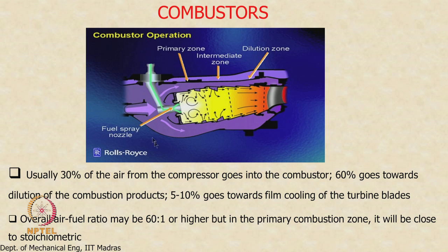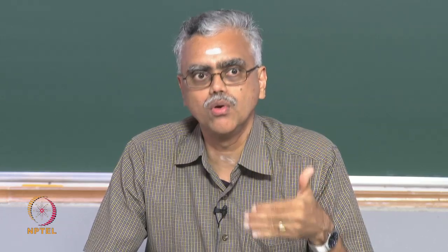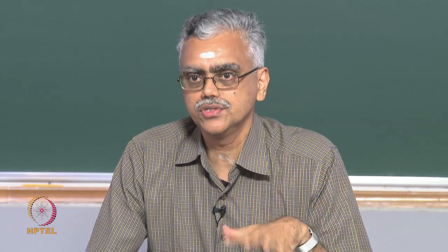About 25 to 30% of air goes to the primary zone, and the remainder goes to the intermediate and dilution zones — the bulk going to the dilution zone. About 5 to 10% of compressor air goes for cooling of the turbine blades. This is important to ensure that the high pressure turbine blades and the first few stages of intermediate pressure turbine blades do not melt, since the operating temperature is well above the melting point of the blade metal.